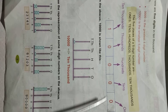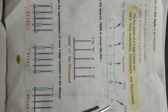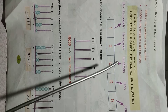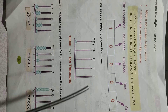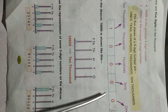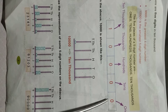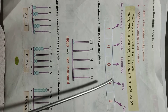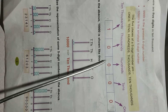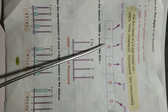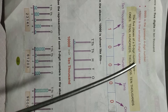This is the place value which is given here: 1s, 10s, 100s, 1000s, 10,000. We move right to left. The 1st place is 1s, 2nd place is 10s, 3rd place is 100s, 4th place is 1000s, and 5th place is 10,000s.